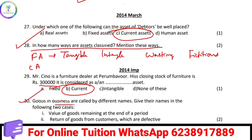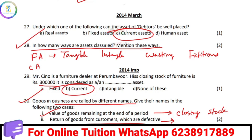Goods in business are called by a different name. Value of goods remaining at the end of the period — what is the name? Closing stock. Return of goods from customers which are defective — what do we call it? Sales return.